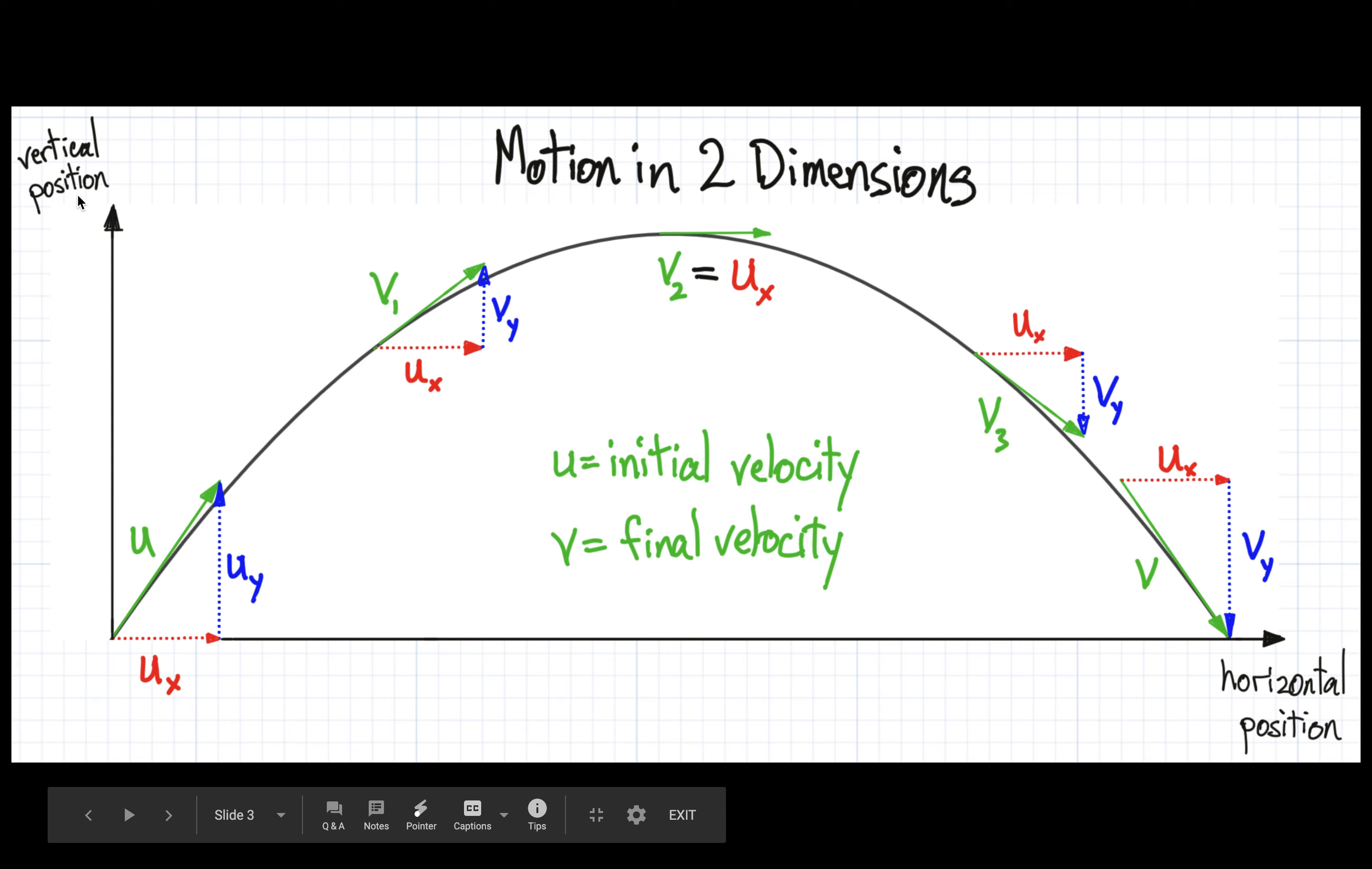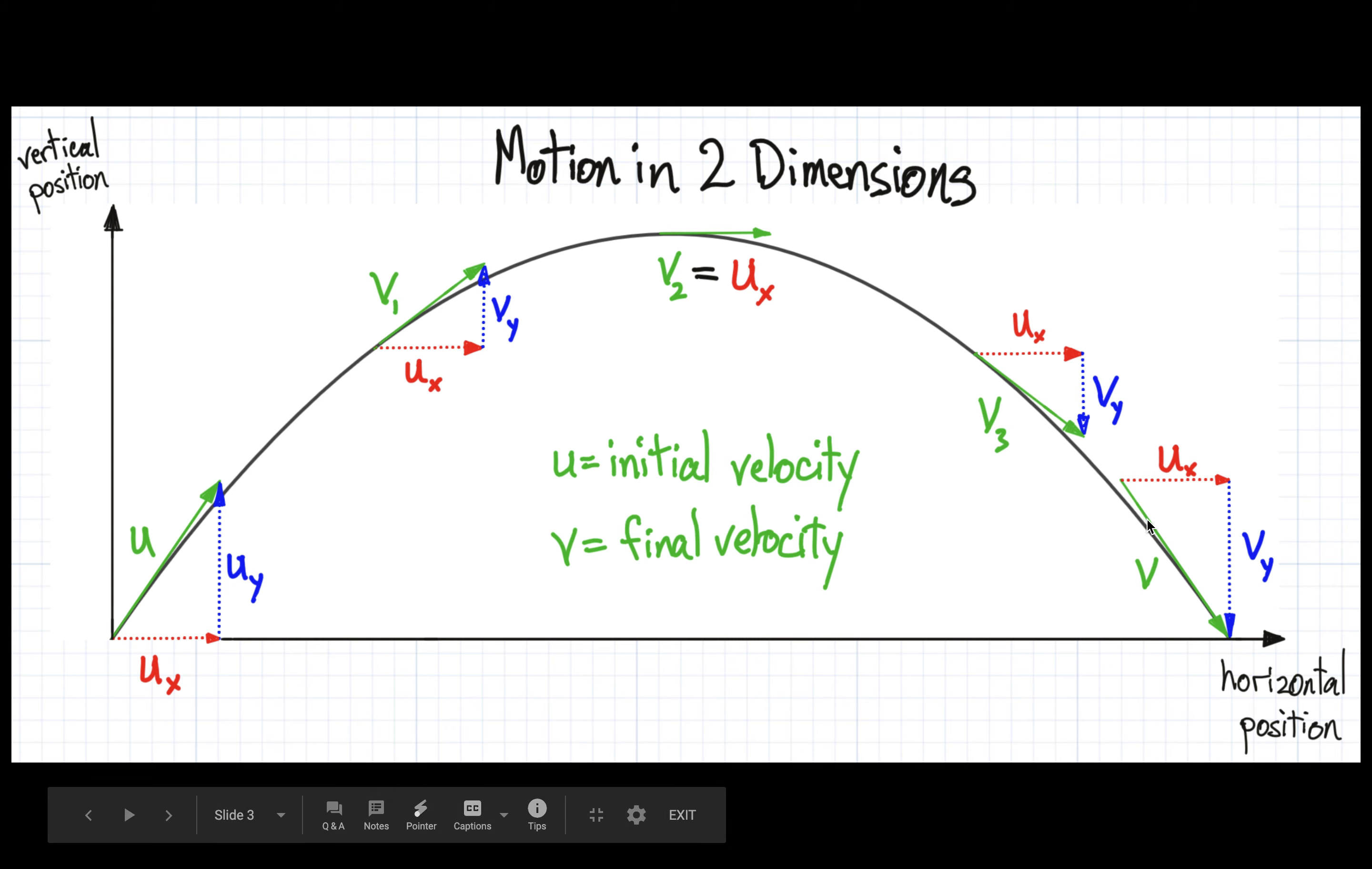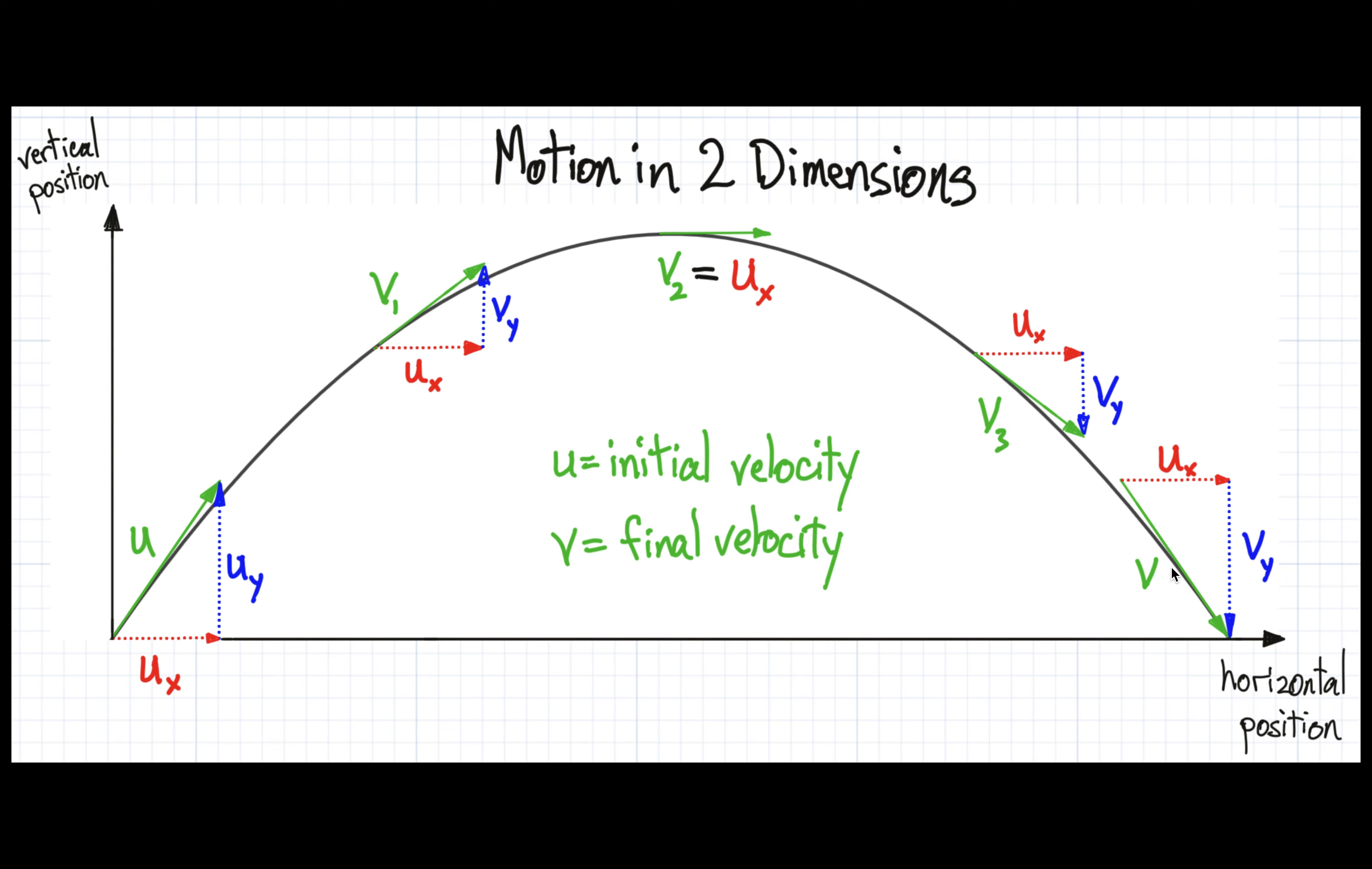I'm not showing any numbers here. We would assume, given that this is position, that what we're looking at then is distance. So if we had to assign a unit, it would be meters, of course. Note that we have also defined here initial velocity as well as final velocity, which are shown here and here, respectively. And we have a few intermediate velocities, including what I've called V sub 1 here, and V sub 2 and V sub 3.